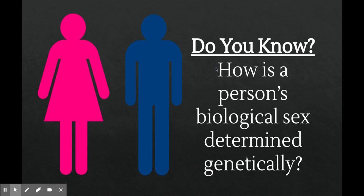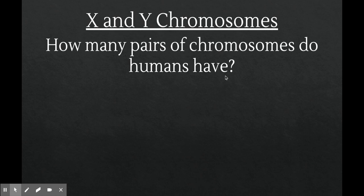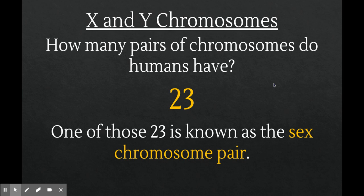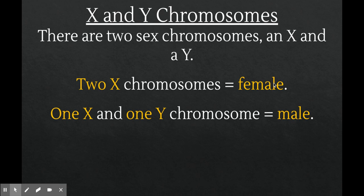First of all, how is human biological sex determined? You might remember that humans have 23 pairs of chromosomes — 46 chromosomes in total. There's one special pair called the sex chromosome pair, and that pair is what determines a person's biological sex. In that pair, there are two standard outcomes: if a person receives two X chromosomes, they are female; and if they receive one X and one Y chromosome, they are male.